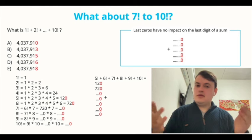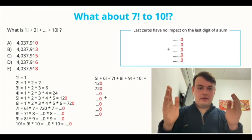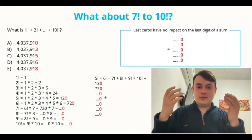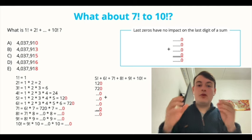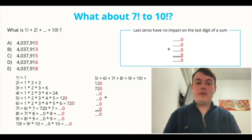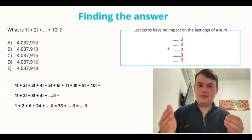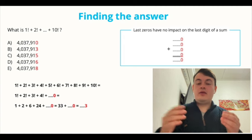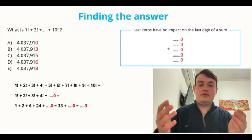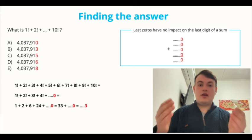Well, there's actually quite a great piece of information. We know that all factorials from 5 to 10, they end with a zero. And thus, they have no impact whatsoever on the last digit of our sum. If we go back to our original question, finding the last digit of the sum of factorials from 1 to 10, we can see that we can omit the factorials from 5 to 10 altogether. They all end with a zero. They have no impact on our sum whatsoever.